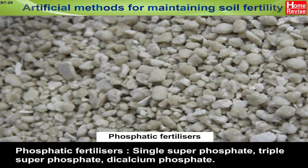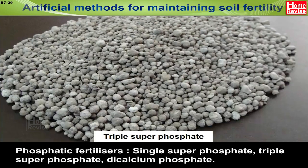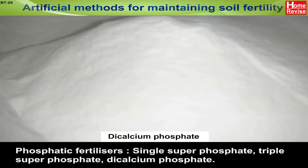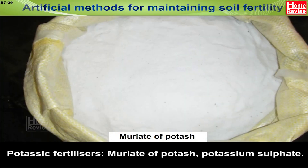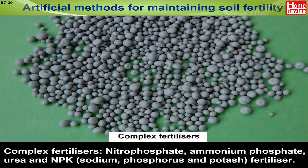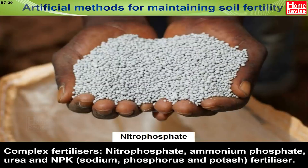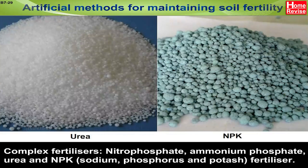Phosphatic fertilizers include single superphosphate, triple superphosphate, and dicalcium phosphate. Potassic fertilizers include muriate of potash and potassium sulfate. Complex fertilizers include nitrophosphate, ammonium phosphate, and urea.